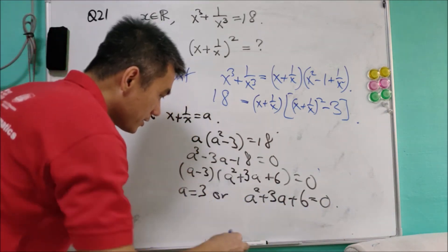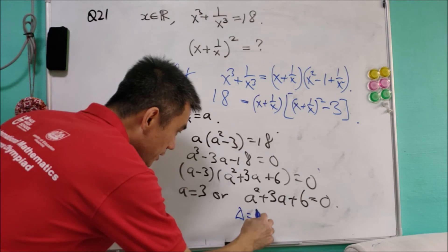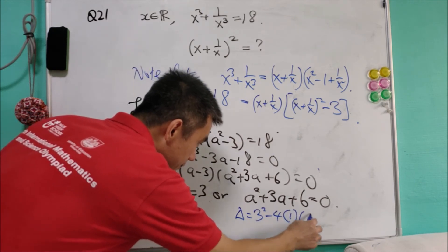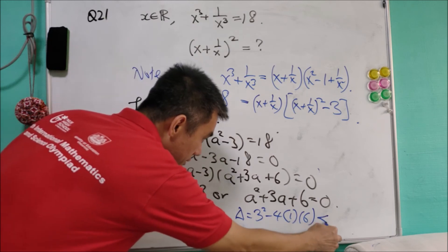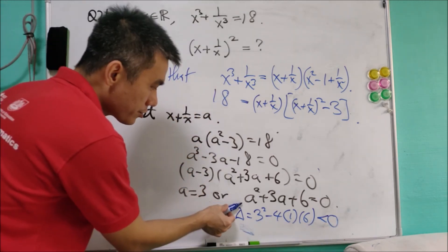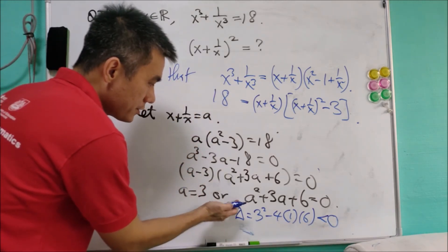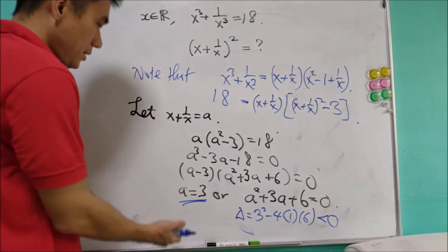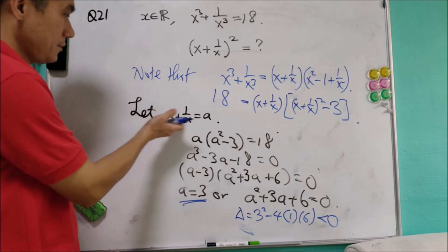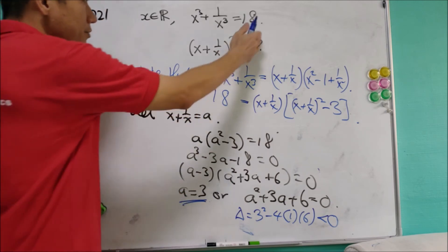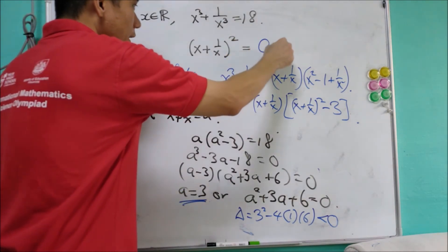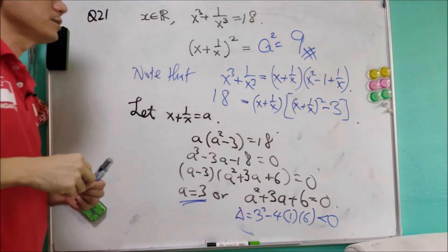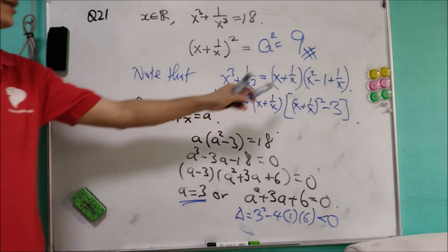For the quadratic a squared plus 3a plus 6 equals 0, we check the discriminant: b squared minus 4ac equals 9 minus 24, which is negative. So there is no real solution from the quadratic factor. Therefore a equals 3, meaning x plus 1 over x equals 3, and (x plus 1 over x) squared equals a squared equals 9. The answer for question 21 is 9.